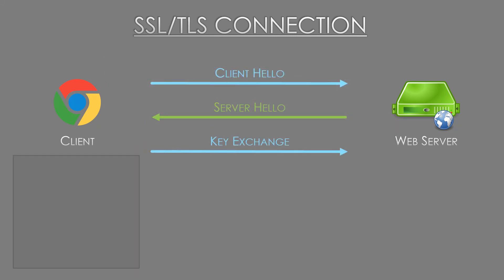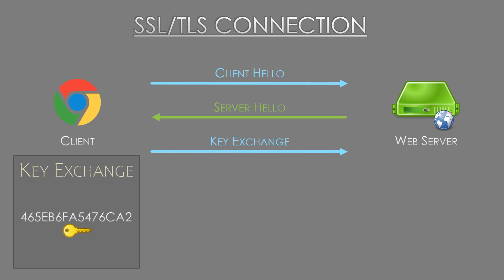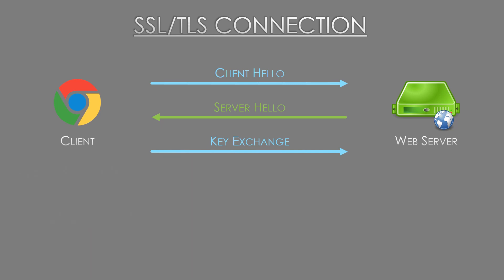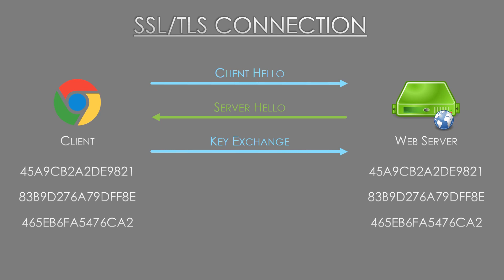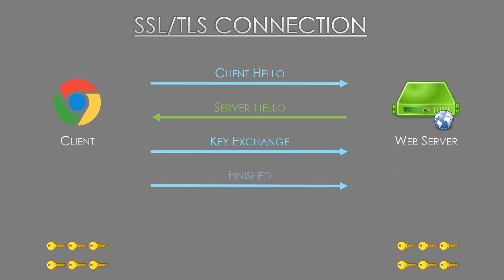The client will now choose a third random number and encrypt it with the server's public key, then send this to the server. This number is called the pre-master key, which only the server can decrypt using its private key. The client and the server now have three random numbers. They use these three numbers to calculate a series of session keys, following the same process with the same numbers, so they arrive at the same result and have the same keys. The client and server then send a finish message to each other and the secure connection is established.